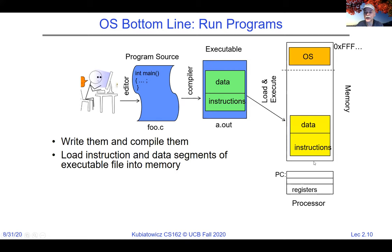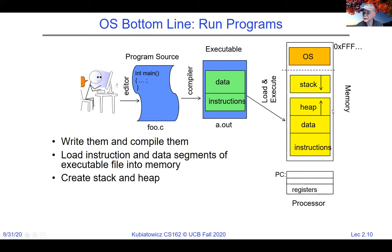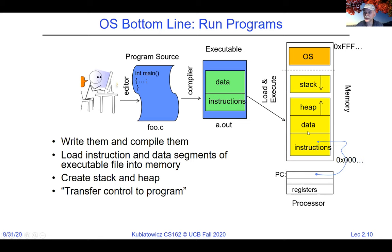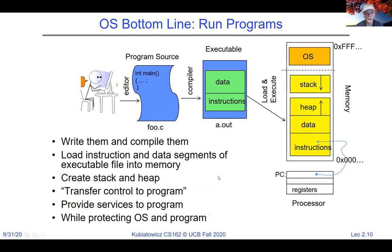The bottom line is we're going to run programs. You'll write and compile them — starting with homework zero and project zero tomorrow. Once written, we'll talk about how they get loaded into memory: the executable is pulled off the file system, loaded into memory, the stack and heap are set up, and then control is transferred — the program counter points at instructions in user code and execution starts. The operating system provides services like the file system while protecting itself and each process from other processes.